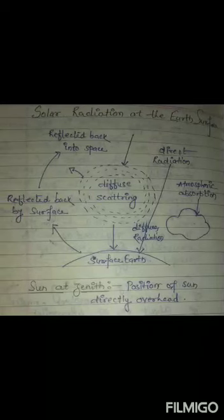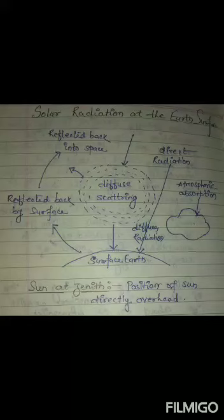There is a diagram of solar radiation at the earth's surface showing the earth's surface and different types of radiation coming from the sun. Some radiation is reflected by the earth's surface. Some radiation is absorbed through atmospheric absorption by different elements. The radiation can be direct radiation and diffuse or scattering radiation, and some radiation is reflected back into space.